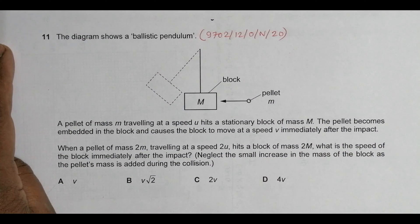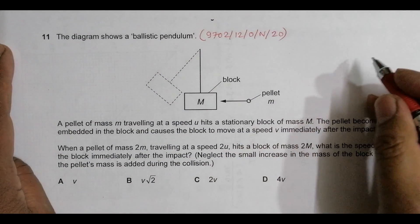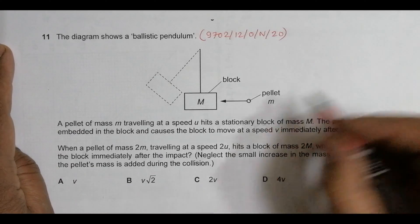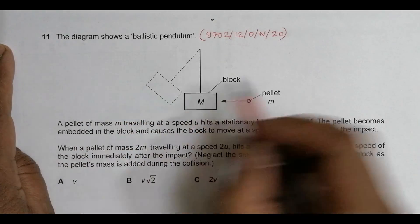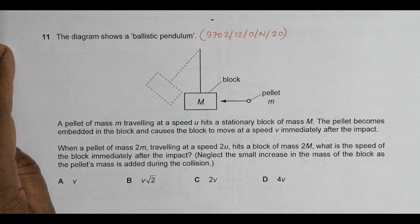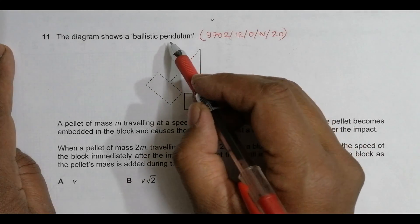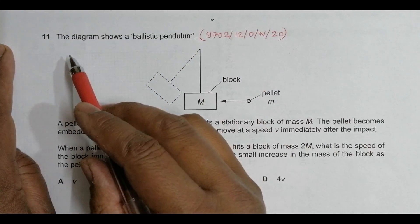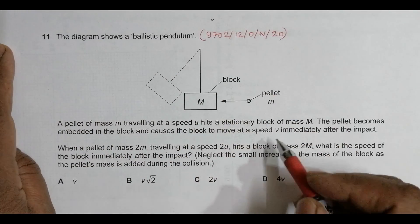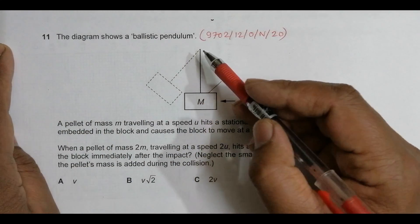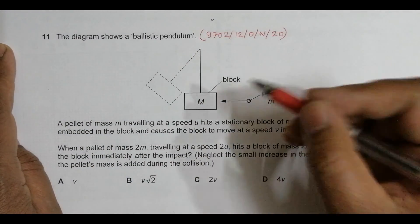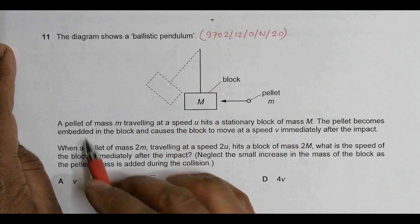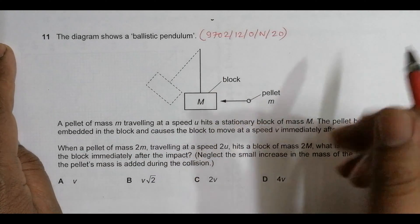Hello folks, this is 2020 October-November Paper 12, question number 11. This question is concerned with dynamics, though the title says ballistic pendulum. The diagram shows a ballistic pendulum that oscillates when struck by something.